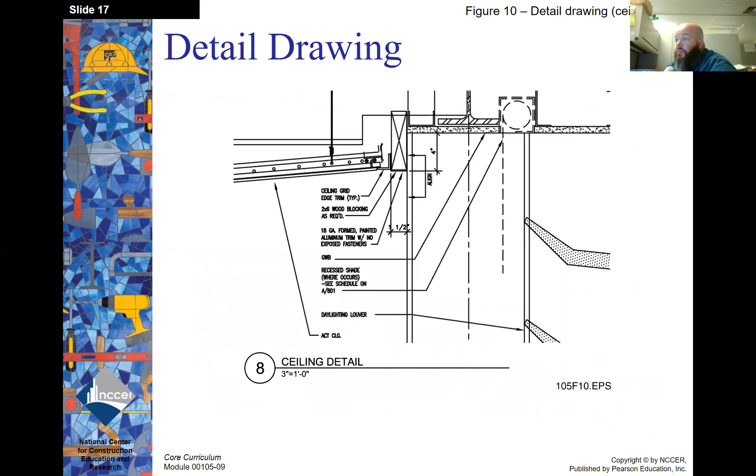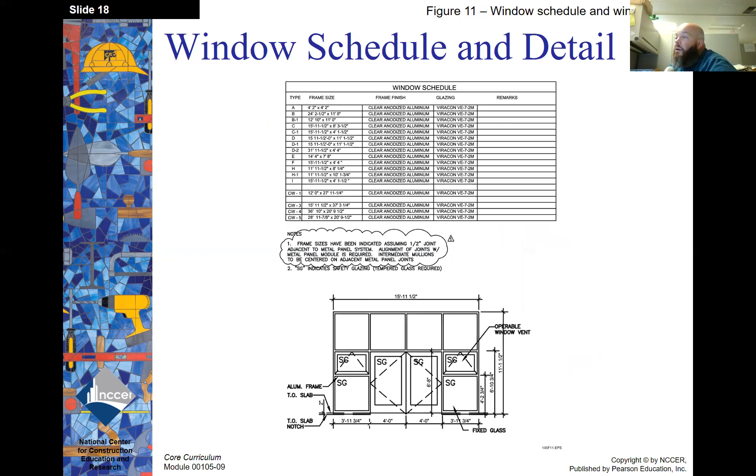A detailed drawing. So a detailed drawing would be something that's set out from the other drawing to show details in a certain area so it can be blown up. A window schedule and detail. So this would also be included, and it would show what windows are required for the project, the dimensions, and any other remarks concerning those.